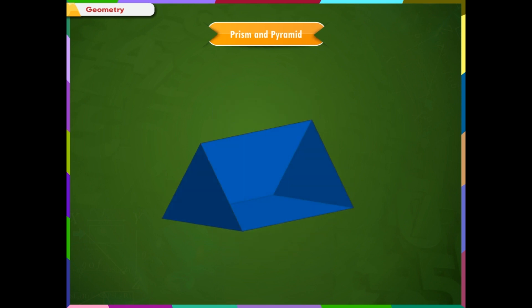3D shapes that have only flat surfaces are called polyhedron. Polyhedron is further classified into prisms and pyramids.